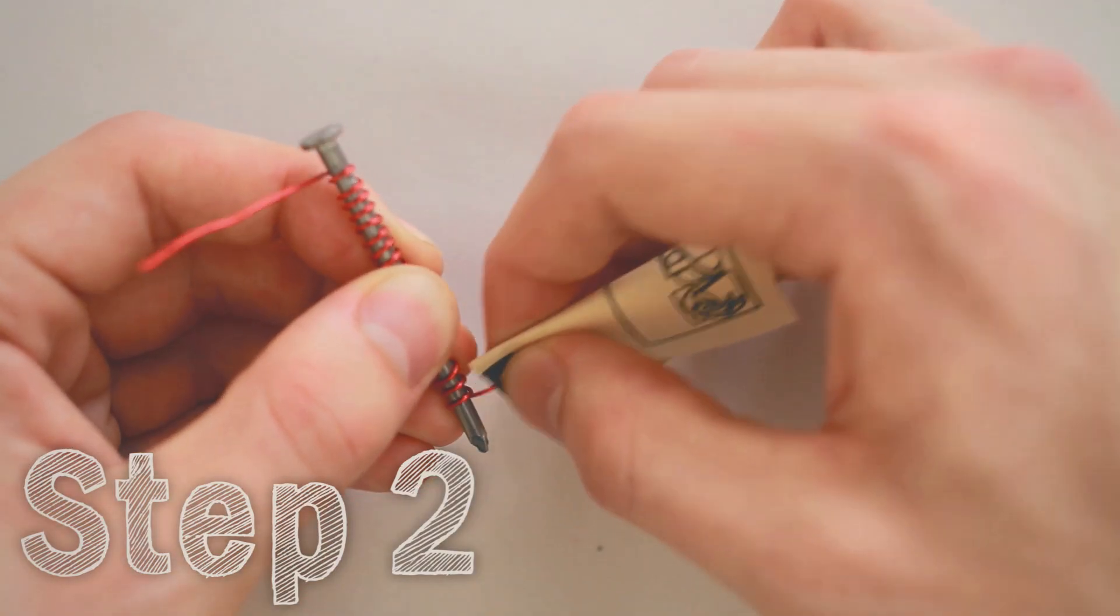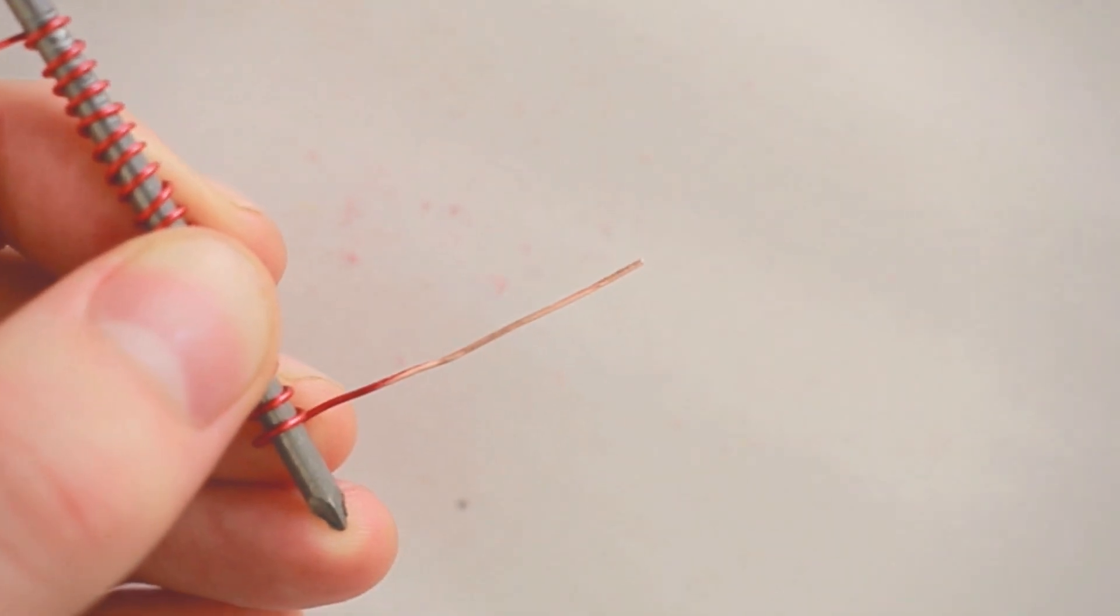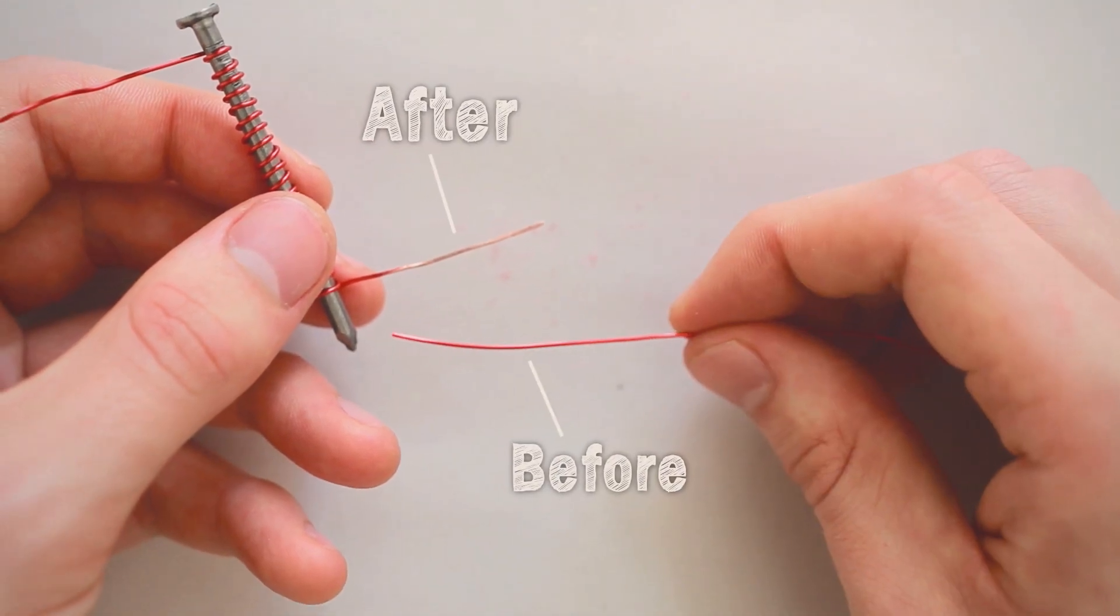Now take your sandpaper and use it to scrape the coating off the wire. As you sand, you'll start to see the copper show through from underneath the coating. Keep sanding until all the red is gone. Once you're done, do the same on the other side.